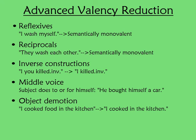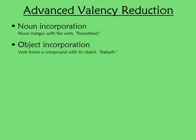There's also object omission, where you get rid of the object and just speak generally — instead of 'I cooked food in the kitchen,' it's 'I cooked in the kitchen.' Then we have noun incorporation and object incorporation. Noun incorporation is when a noun binds with the verb, for example 'breastfeed.' Object incorporation is where the object is put in there as well — so 'babysit' instead of 'I sit the baby.'